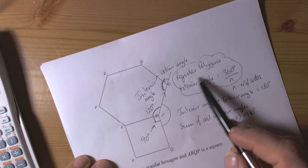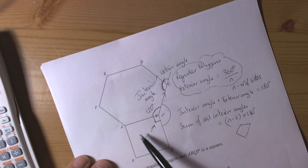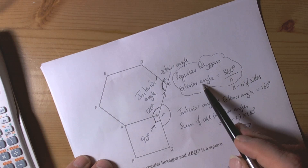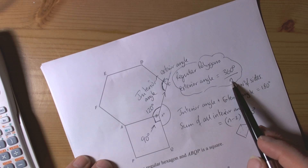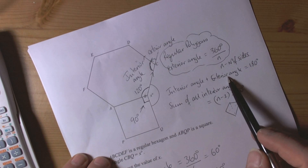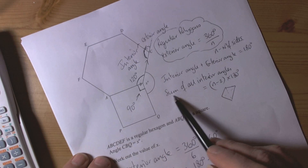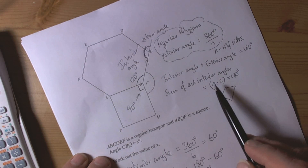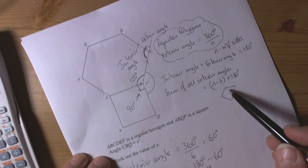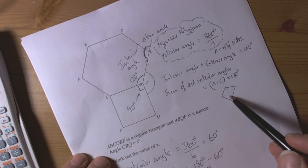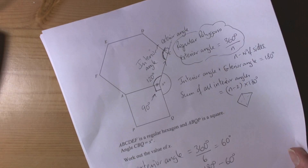To summarise the formulas for polygons: for regular polygons, the exterior angle equals 360 degrees divided by the number of sides. The interior angle plus exterior angle always equals 180 degrees. The sum of all interior angles is (n − 2) × 180, where n − 2 gives the number of triangles you can create inside the polygon.